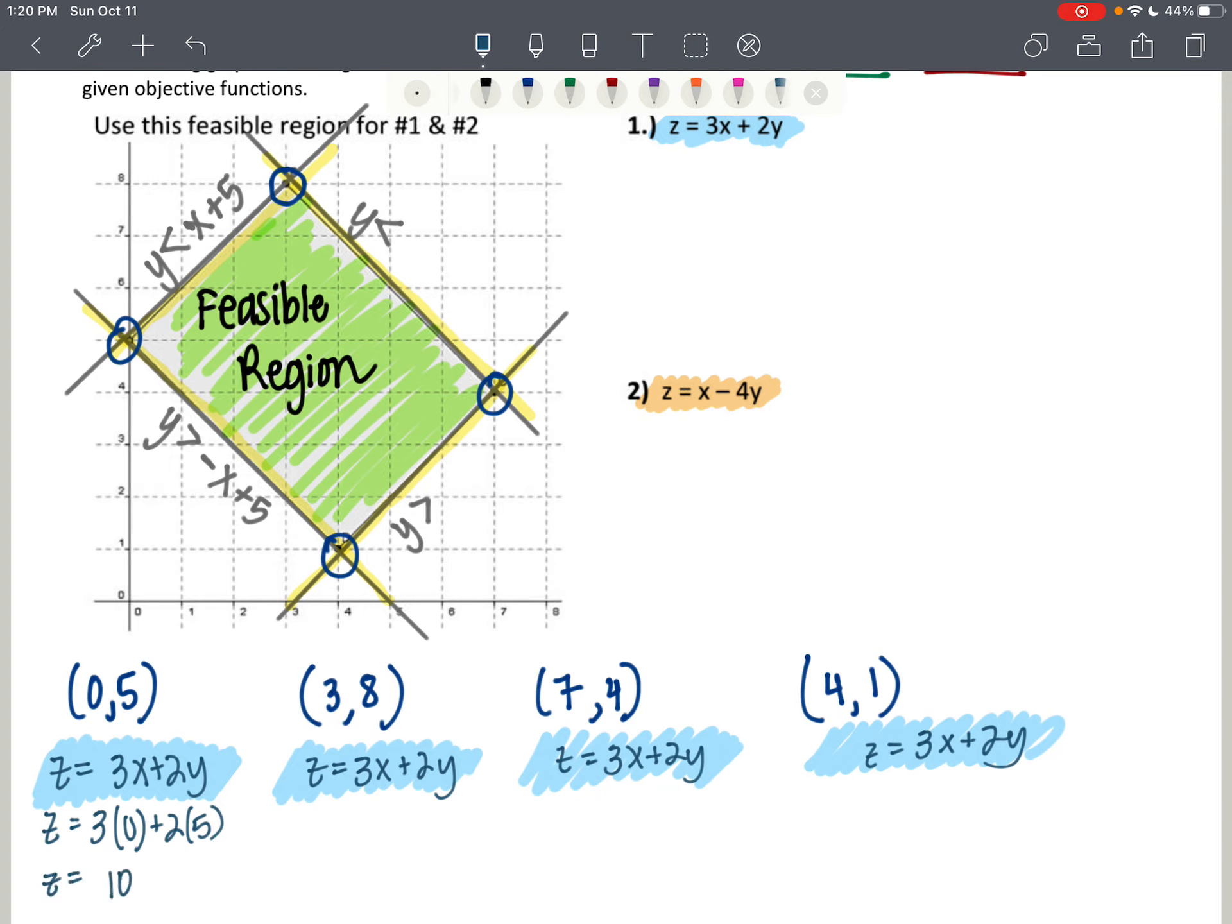The next ordered pair, we're going to put a 3 in for x and an 8 in for y. That's going to give us 9 plus 16, which I believe is 25 today. And then we're going to have a 7 that goes in for x and a 4 that goes in for y. That's 21 plus 8 is 29. And then we're going to put a 4 in for x and a 1 in for y. 12 plus 2 is 14. z equals 14.